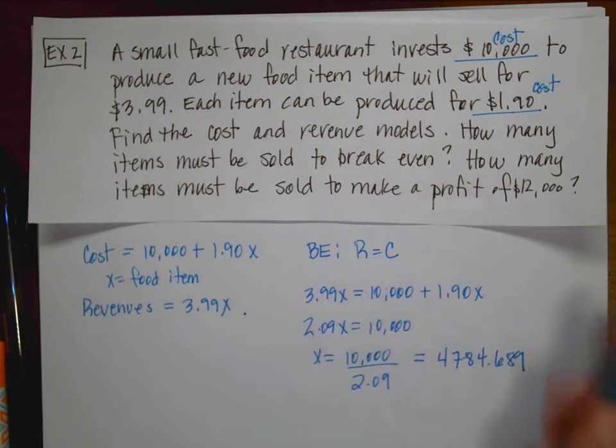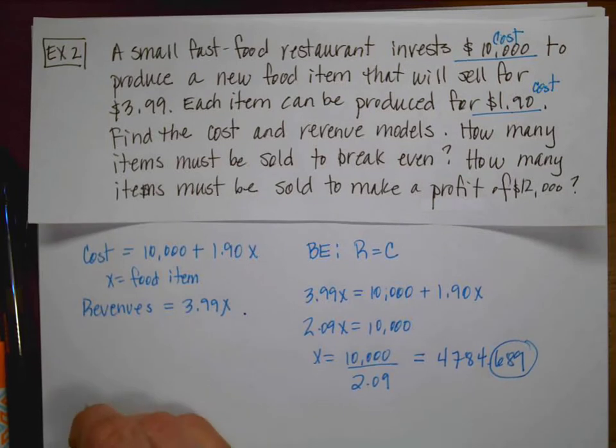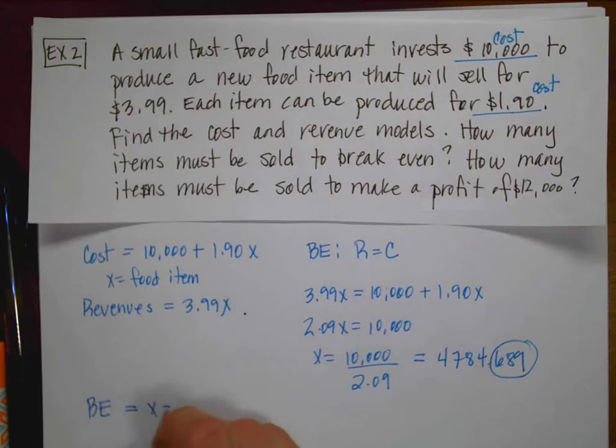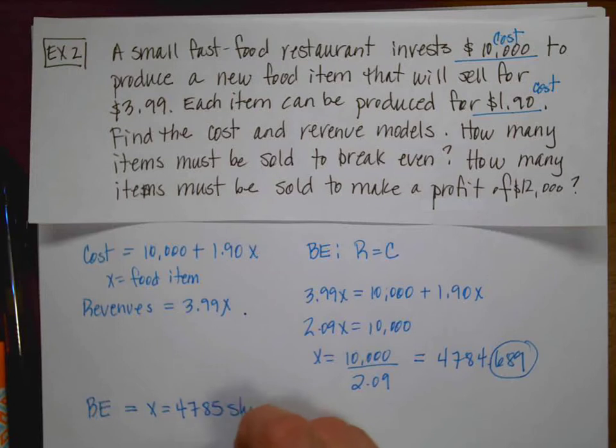And remember, it says how many items must be sold to break even. That's kind of weird, 0.689 of a food item. And so I would say that the break even is going to happen when X is equal to 4785 food items.